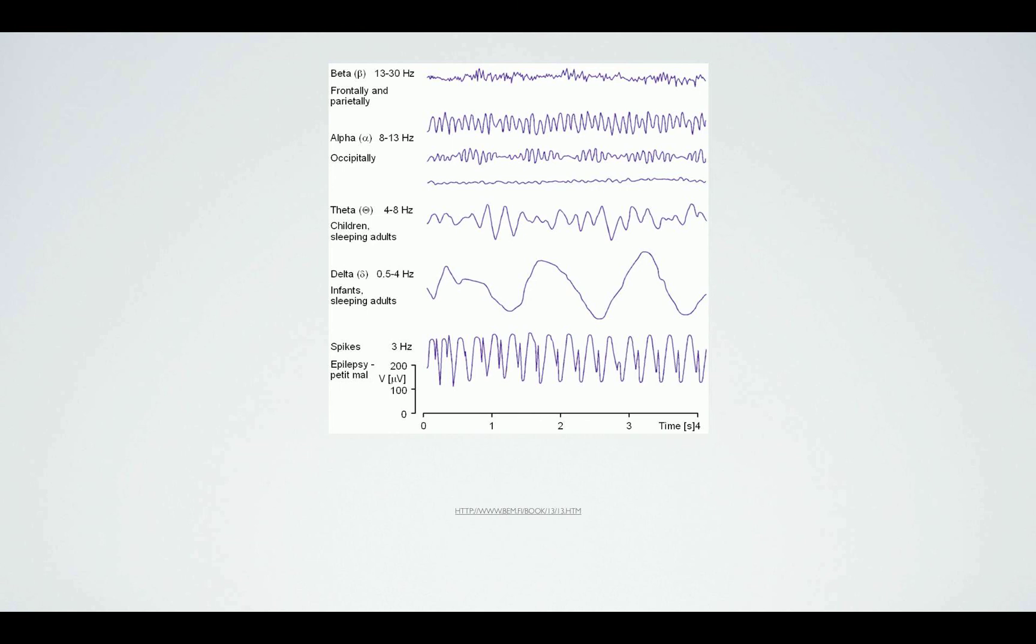Theta waves are found during sleep at any age but are abnormal if they are found in excess in awake adults. Delta represents deep sleep in both adults and children and is the dominant rhythm in infants up to one year old, and they are abnormal if found in awake adults.